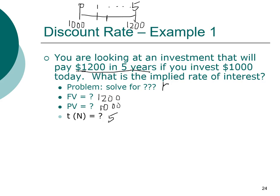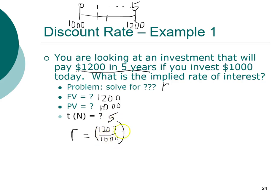Now we need to solve for the interest rate. Using the rearranged formula, the interest rate equals the future value of $1,200 divided by the present value of $1,000, raised to the power of 1 over 5, minus 1. Step by step: $1,200 divided by $1,000 is 1.2, and 1 over 5 is 0.2.